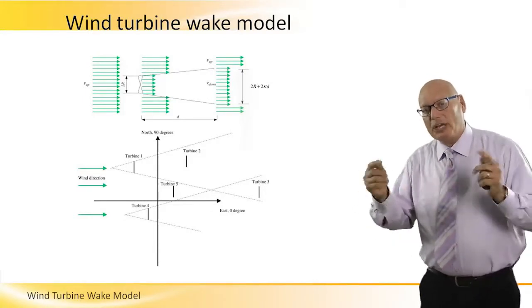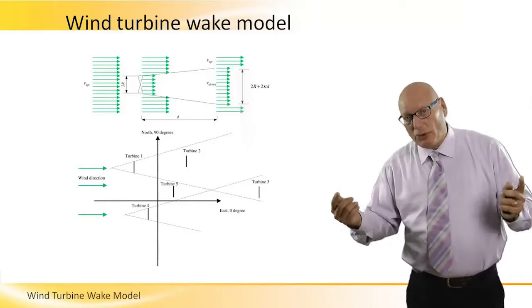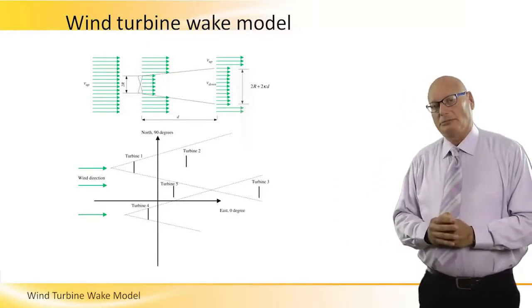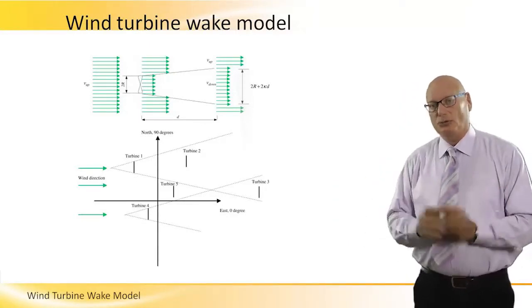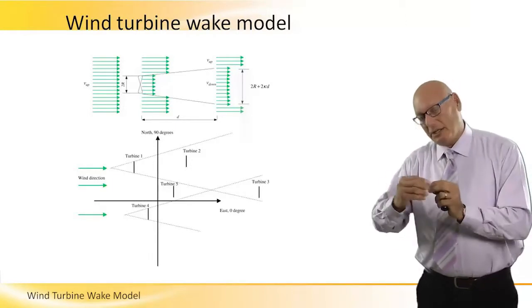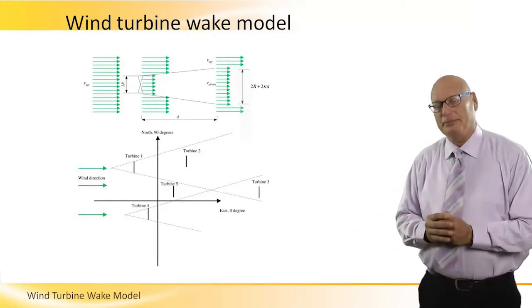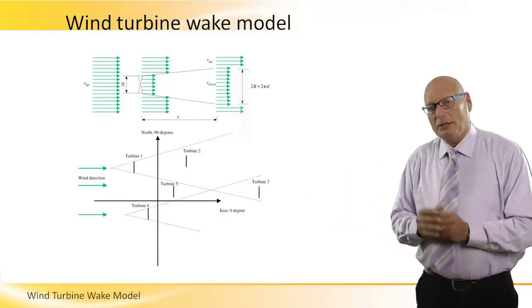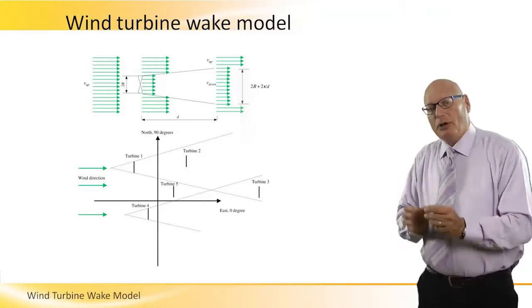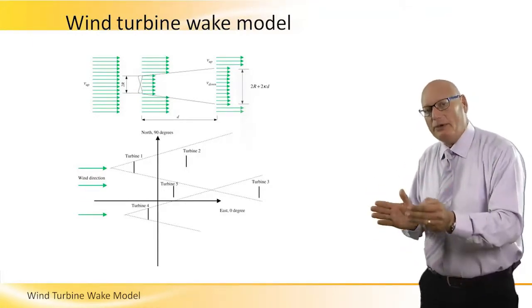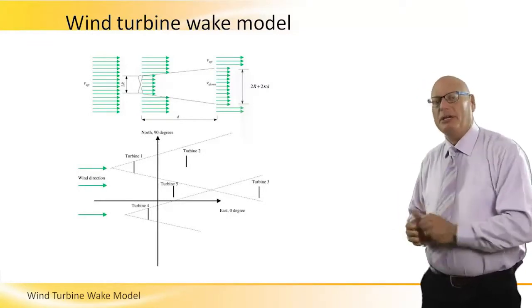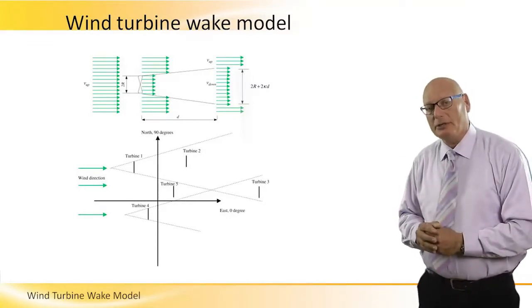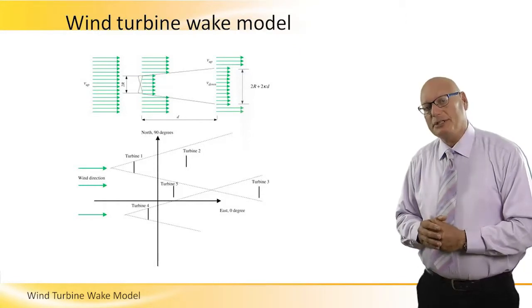And if we have a rotor diameter of about 200 meters, meaning the length of a blade will be 100 meters, in this particular example we need to keep one kilometer away from one turbine in the front row to the one behind it. And one kilometer is a very long distance.